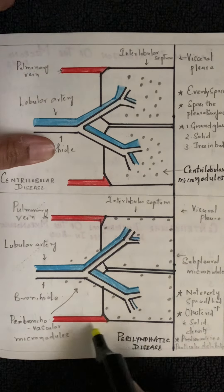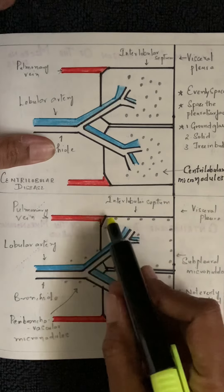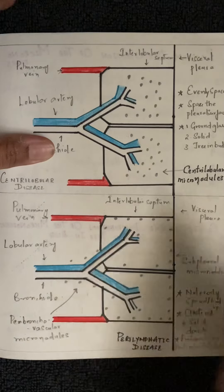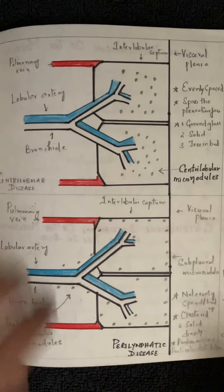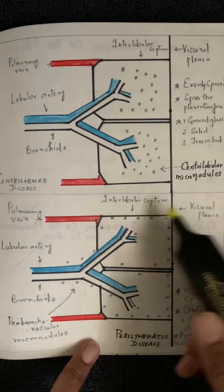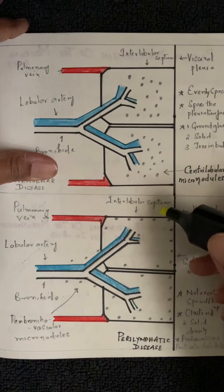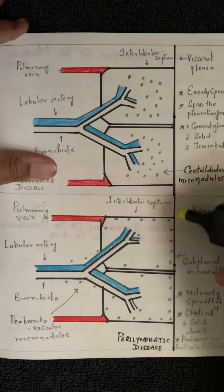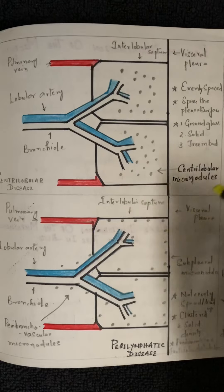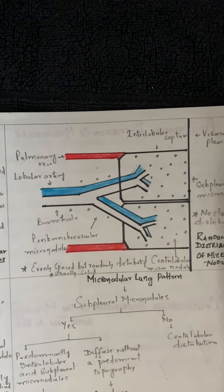Coming to perilymphatic distribution: these nodules are situated along the pleura (subpleural region), along the interlobular septum, and along the peribronchovascular region. They are not evenly distributed — they are clustered. They are of solid density. One particular location tends to predominate, whether along the interlobular septum, subpleural, or peribronchovascular.